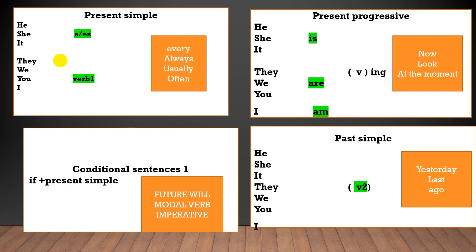The next structure is the past simple. All subjects — he, she, they, we, I — are followed by the verb in its past form. We use this tense to talk about a finished action. For example, when I have in my sentence: yesterday, last, or ago.